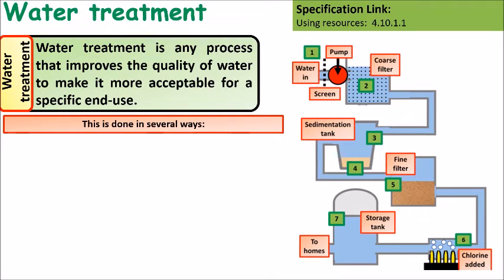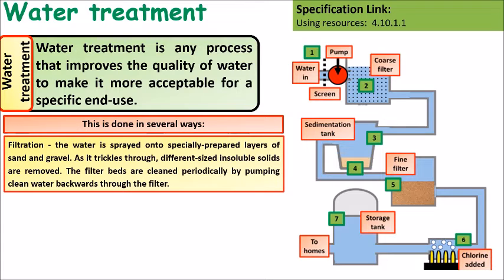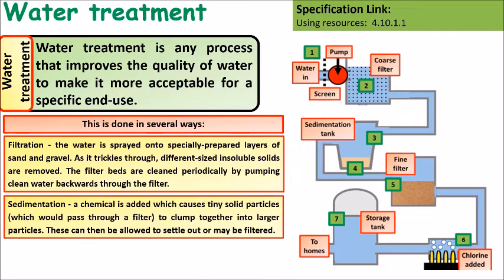Water treatment is any process that removes impurities and improves the quality of water so that it can be drunk. The main processes involved are: filtration, which is the process of filtering out larger materials through filter beds or screens; and sedimentation, where a chemical is added that causes small particles to clump together, sink to the bottom, and form a layer of sediment that can be filtered out.